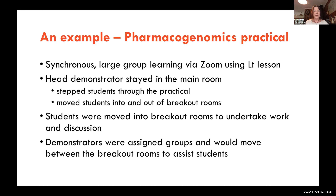The example I'll give you now is the pharmacogenomics practical — synchronous, in-time, large-group learning. We've got 300 students, four repeats over four days, so at least 80 students in each class, all using LT. I would stay in the main Zoom room, do the scaffolding and step students through the material, then send them into breakout rooms to work on questions. Demonstrators would move in and out of different allocated breakout rooms to help facilitate discussion.